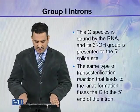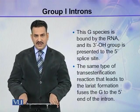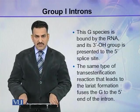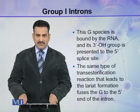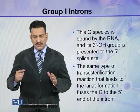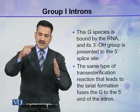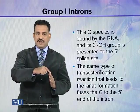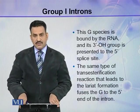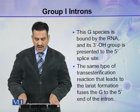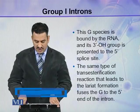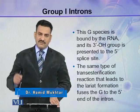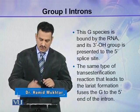This G species is bound by the RNA, and its 3' OH group is presented to the 5' splice site. So, this 3' OH attacks the 5' splice site. The same type of transesterification reaction that leads to lariat formation fuses the G to the 5' end of the intron.